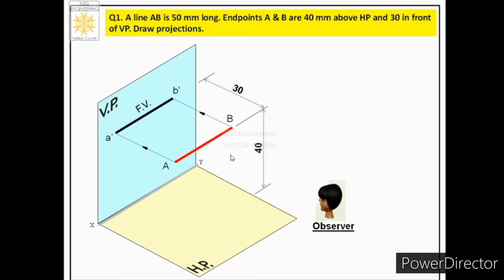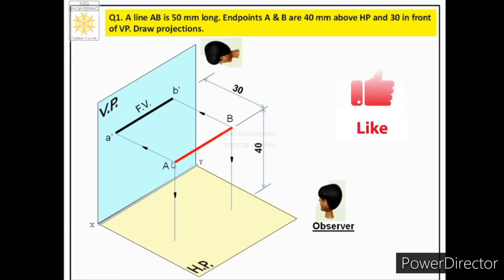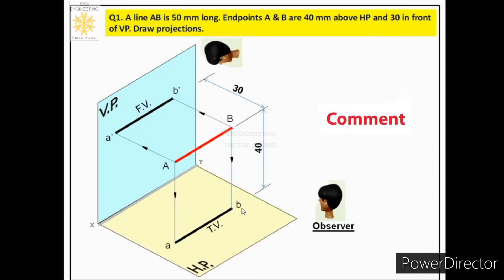To get the top view, the observer changes position and looks from the top. Rays of sight from the observer's eye strike the two endpoints and project their images onto the horizontal plane. Connecting those two projections gives the top view of the line, denoted by small letters a and b.